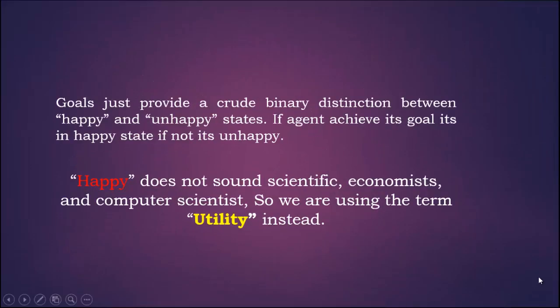Goals just provide a crude binary distinction between happy and unhappy states. If the agent achieves its goal it's in a happy state, if not it's unhappy. Happy does not sound scientific to economists and computer scientists, so we are using the term utility instead.